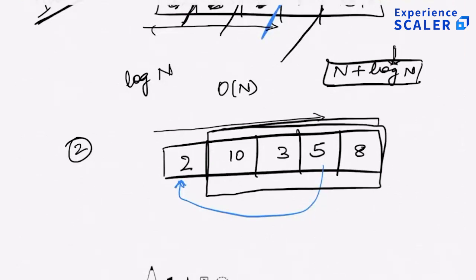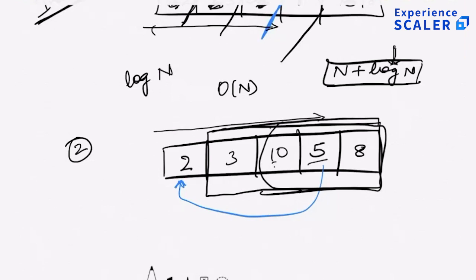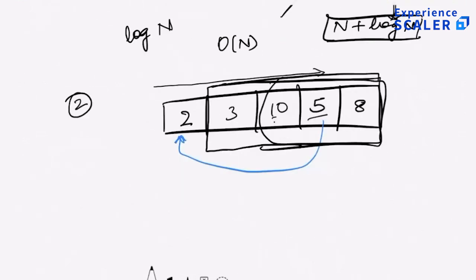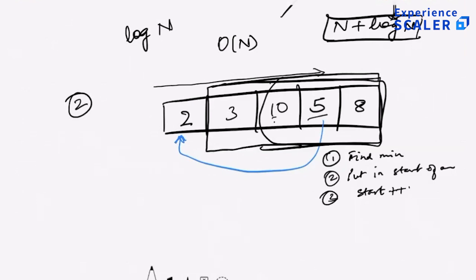I only have to sort the remaining 4 elements and I repeat the process. For the remaining 4 elements, I again look for the minimum — find 3, so I swap 10 with 3. Then I sort the last 3 elements, and again I look for the minimum, 5, and put 5 in place, and so forth. The only downside of this approach, while it works, is it is O(n²) no matter what the input. Best case, worst case — everything is O(n²). The steps were: find minimum, put it at start of array, then start++.